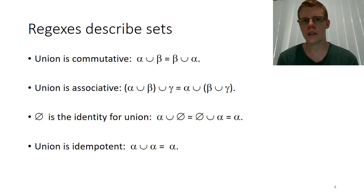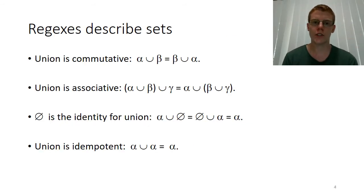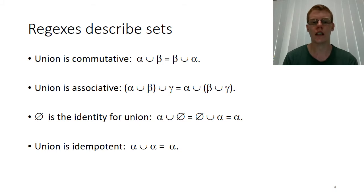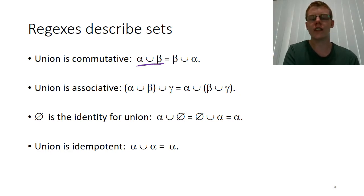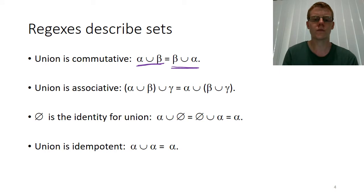A regex describes a language which is just a set, which means that the same basic principles that apply to concepts like union and the empty set still apply to regexes directly. So when we write down something like a regex union with another regex, the same rule of commutativity of union applies — it's exactly the same as writing beta union alpha. Union is also associative.